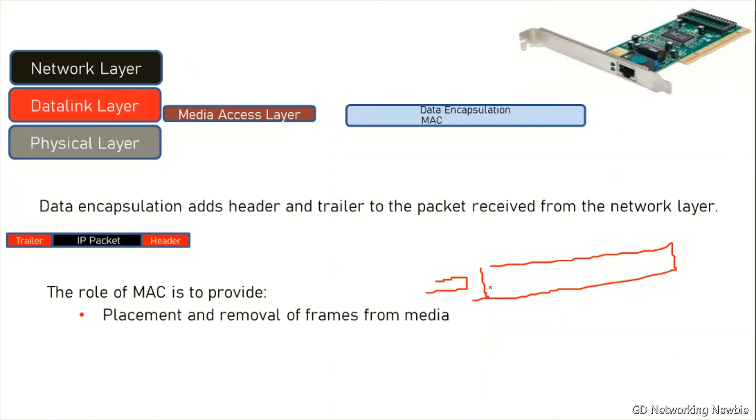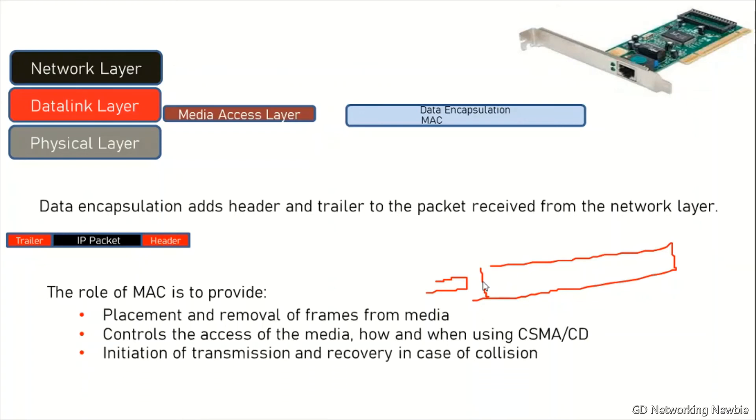The second job is to control the access of the media. It means a media is there, but at one time who is allowed to use that media by using the CSMA/CD scheme. This is the responsibility of MAC layer to control the access of the media which is being used by different nodes. The job of MAC layer is also to initiate the transmission and it also recovers if there are some errors or collision terms.